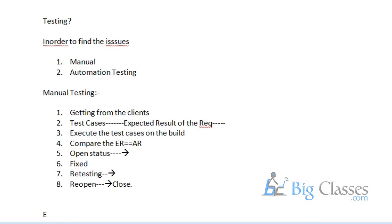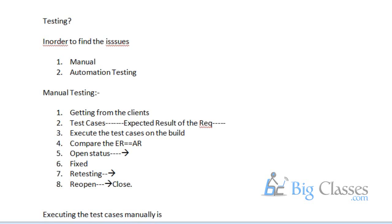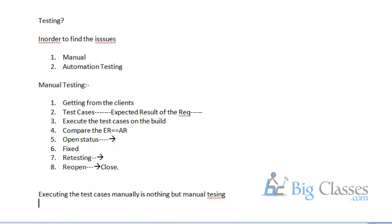Executing test cases manually is nothing but manual testing. Automation testing means executing test cases by using a third-party tool or third-party software — that is called automation testing.